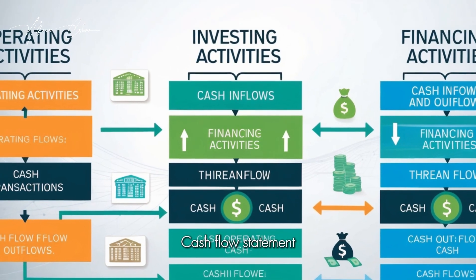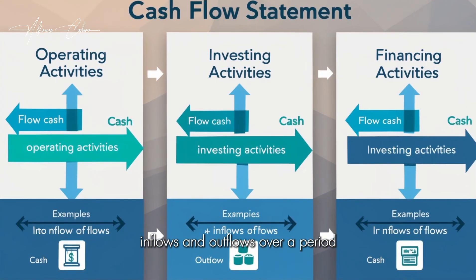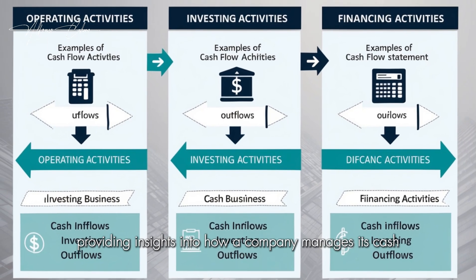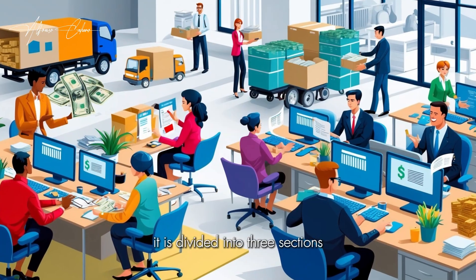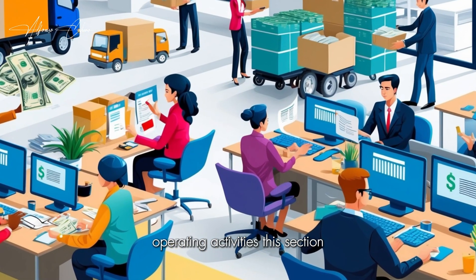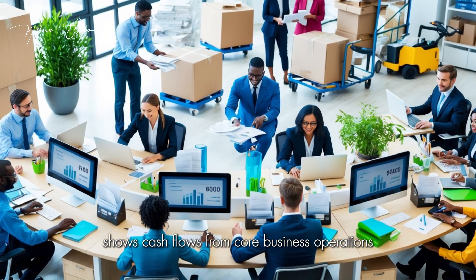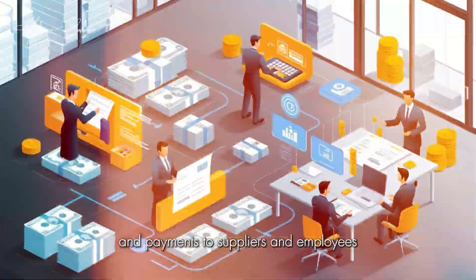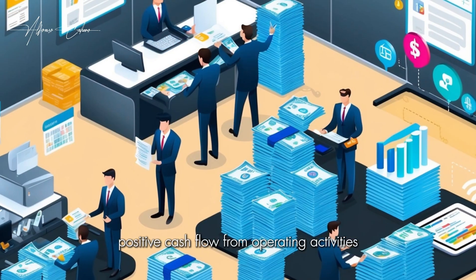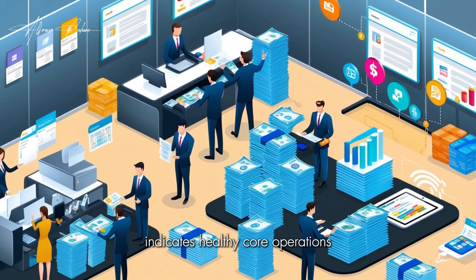The cash flow statement details cash inflows and outflows over a period, providing insights into how a company manages its cash. It is divided into three sections. Operating Activities shows cash flows from core business operations, including receipts from sales and payments to suppliers and employees. Positive cash flow from operating activities indicates healthy core operations.